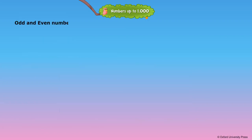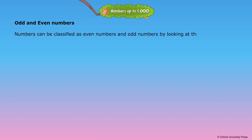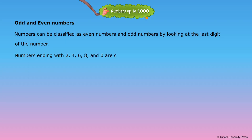Odd and even numbers: numbers can be classified as even or odd by looking at the last digit. Numbers ending with two, four, six, eight, and zero are called even numbers. Two thousand and sixteen and two thousand and eighteen are even numbers.